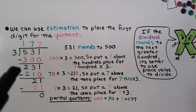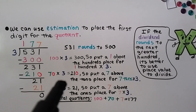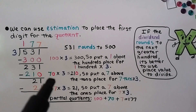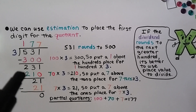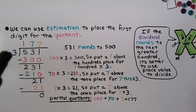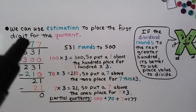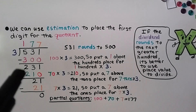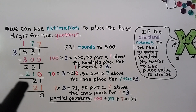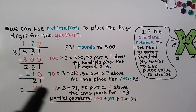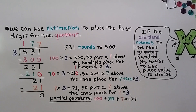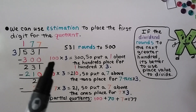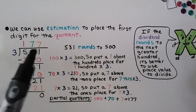Now, how many times can 3 fit into 231? Well, 3 times 7 is 21. If we put a 0 on that 7 and make it 70, we put a 0 on the 21 and make it 210. So we do 3 times 70, put the 7 in the tens place. We subtract 210 and get 21. Then 7 times 3 is 21, so we put a 7 in the ones place. We subtract and get 0. Our partial quotients were 100 and 70 and 7, which equals 177.